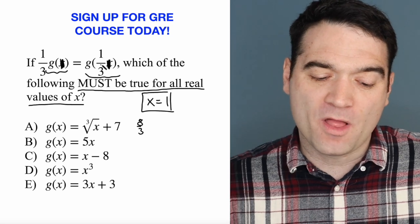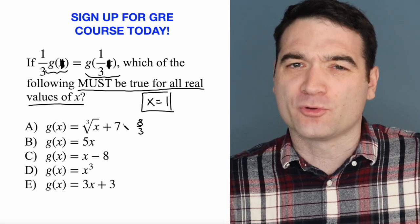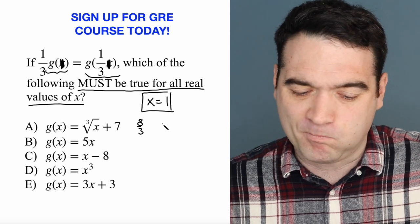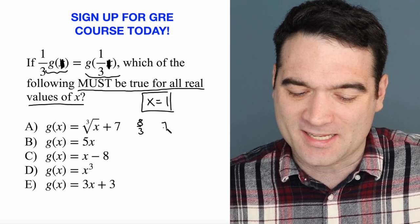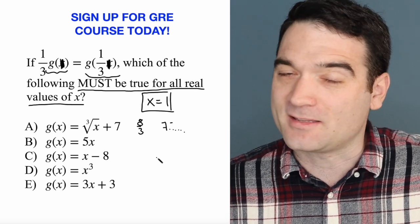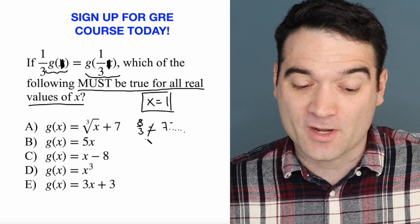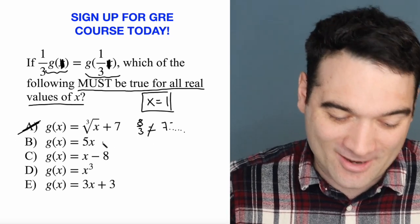And then g of one-third is going to be the cube root of one-third plus seven. That's going to be seven point something, right? It's not the same, right? These two are not equal, and so this one fails the test. Goodbye, all right?